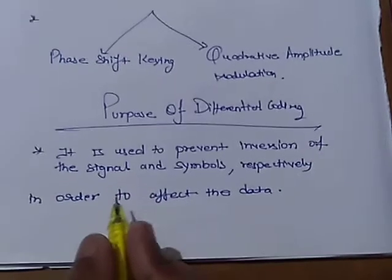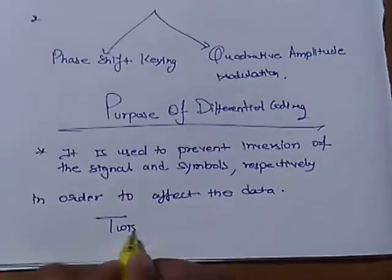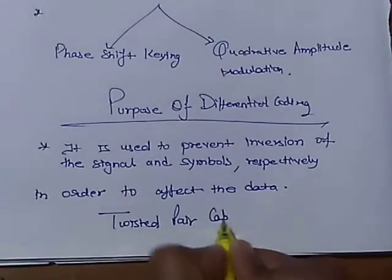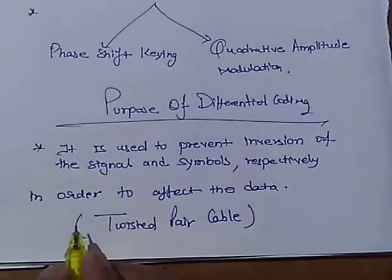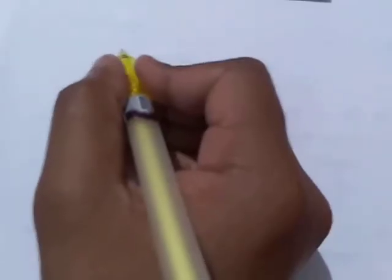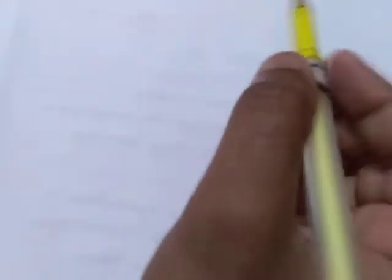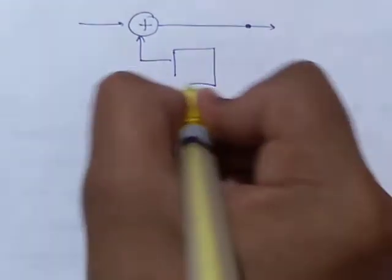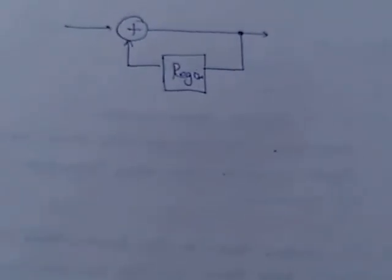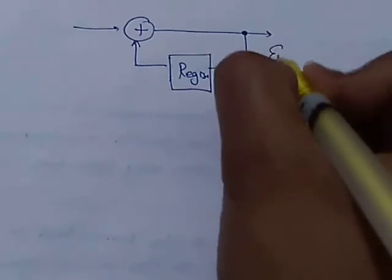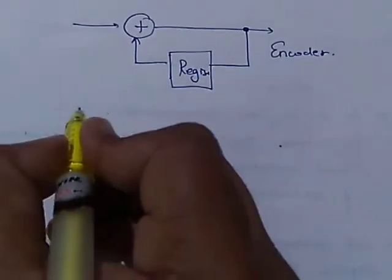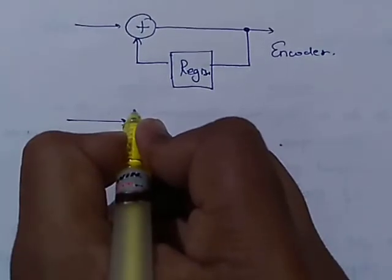This data is transmitted over a twisted pair cable. In differential coding, differential encoder and differential decoder are used. This is a differential encoder and we have a differential decoder also.